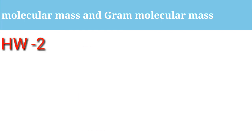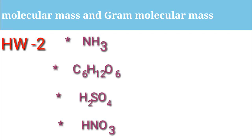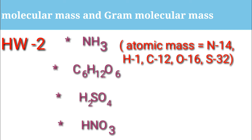Find the molecular mass of the following compounds: NH₃ (ammonia), C₆H₁₂O₆ (glucose), H₂SO₄ (sulfuric acid), HNO₃ (nitric acid). Provided atomic masses: nitrogen 14, hydrogen 1, carbon 12, oxygen 16, sulfur 32.